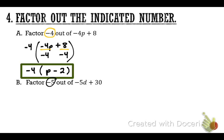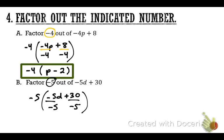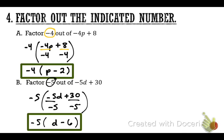For the next problem, factor out negative 5 from the original. Rewrite it and divide each term by negative 5. Negative 5D divided by negative 5: two negatives make a positive, so the first term is positive D. 30 divided by negative 5 is negative 6. Final answer: negative 5(D − 6).